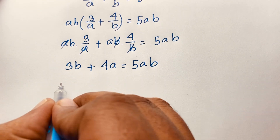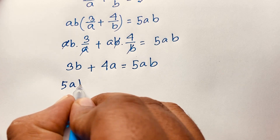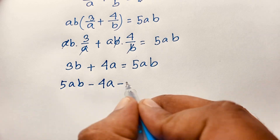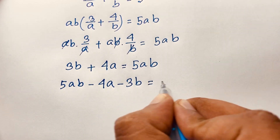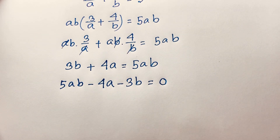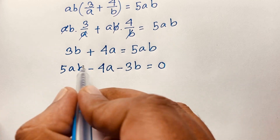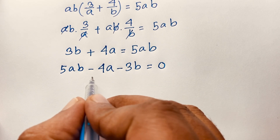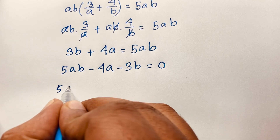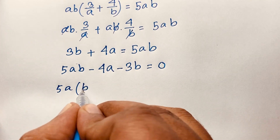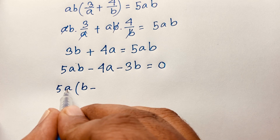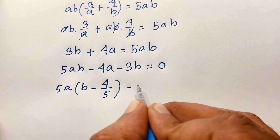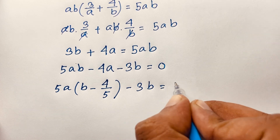This equation becomes 5AB minus 4A minus 3B is equal to 0. I factor out 5A from the first two terms: 5A times (B minus 4 over 5) minus 3B equals 0.